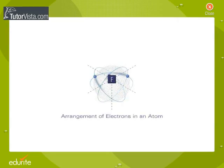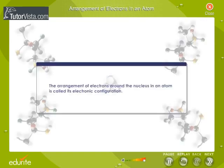The arrangement of electrons around the nucleus in an atom is called its electronic configuration. The chemical properties of an atom are determined by this arrangement.